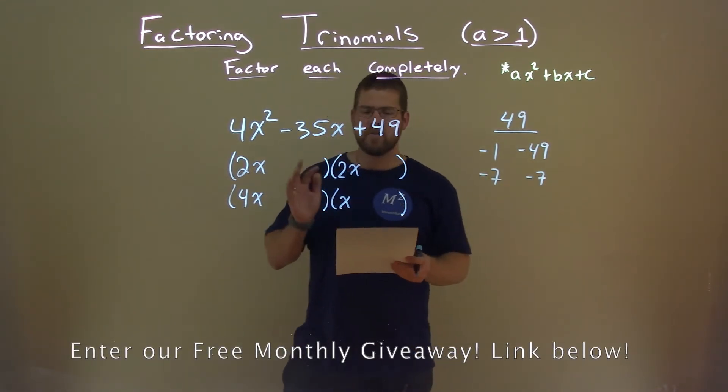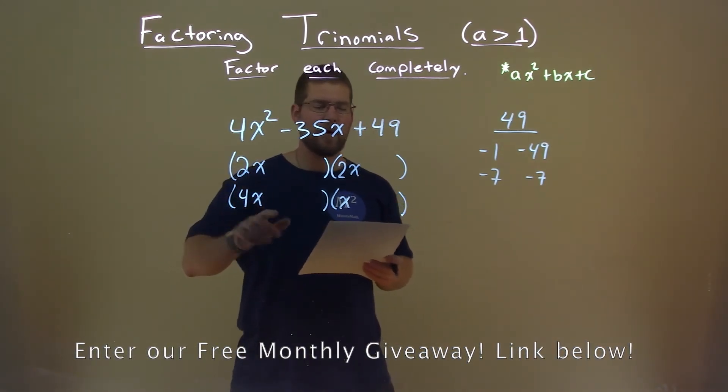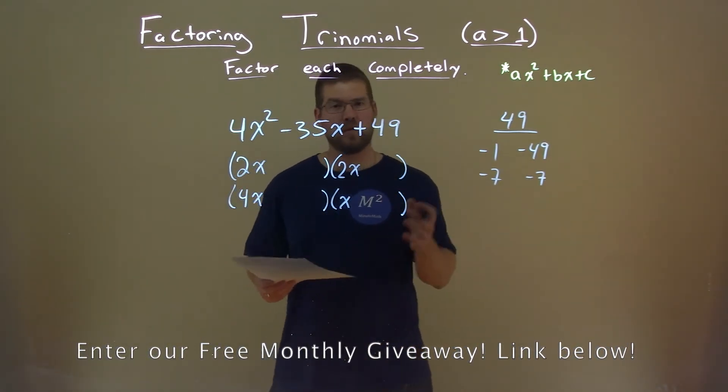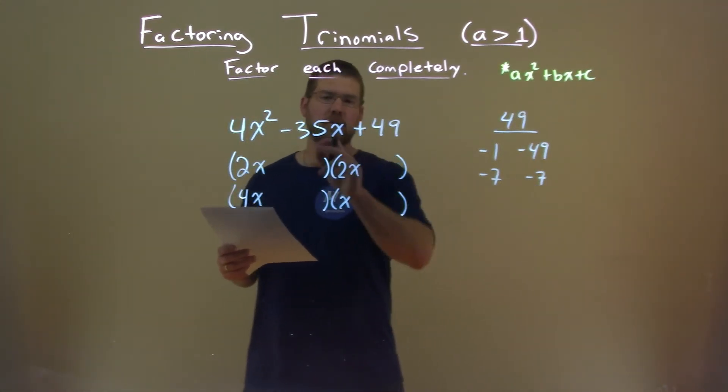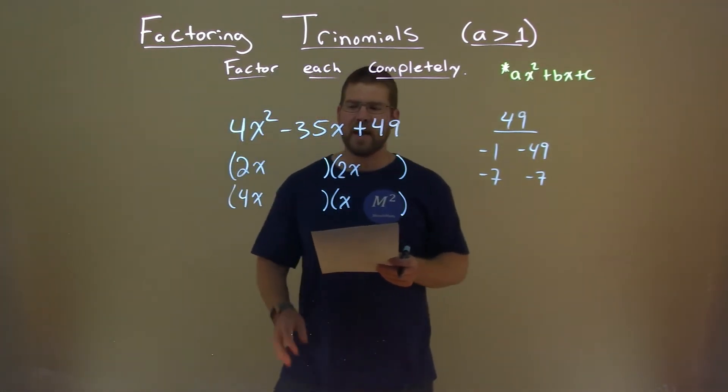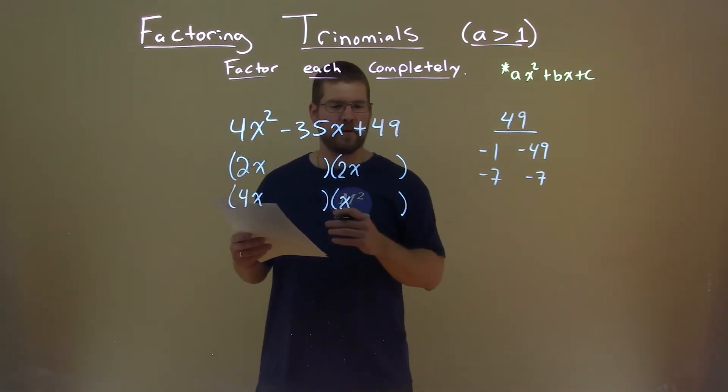Okay, so now I'm trying to find which numbers here, which values, this is how I get my best guess, the first ones to try, what number times one of these gets me close to negative 35. And I see 4 times a negative 7, which is a negative 28. That's pretty close to negative 35.